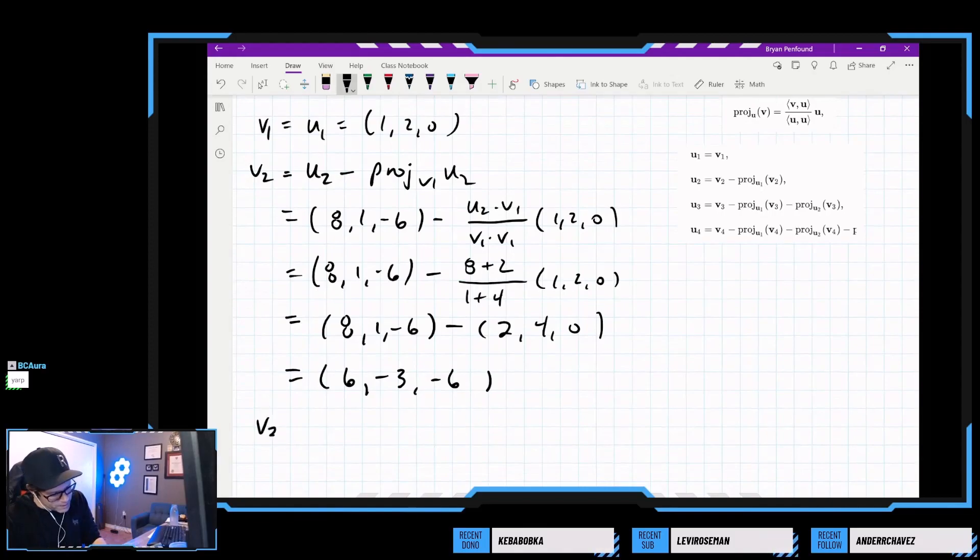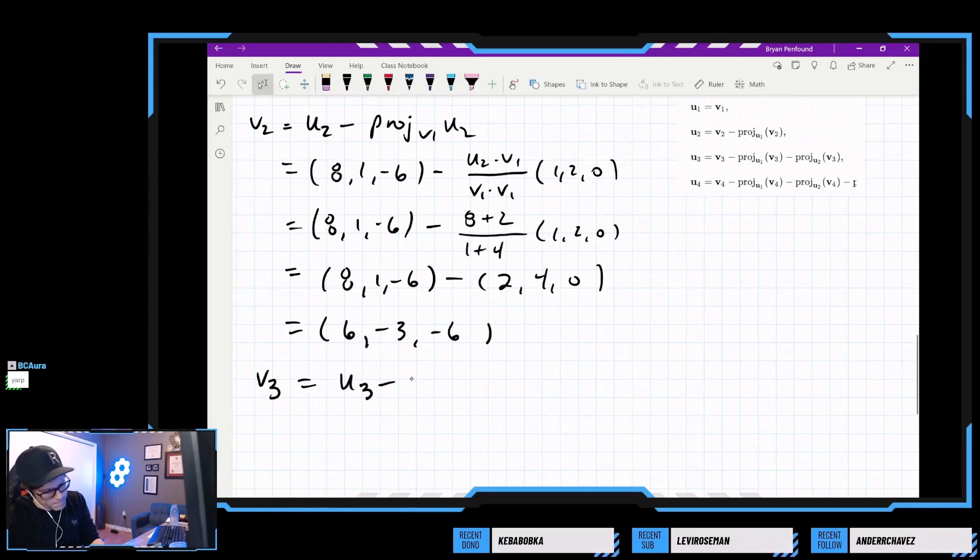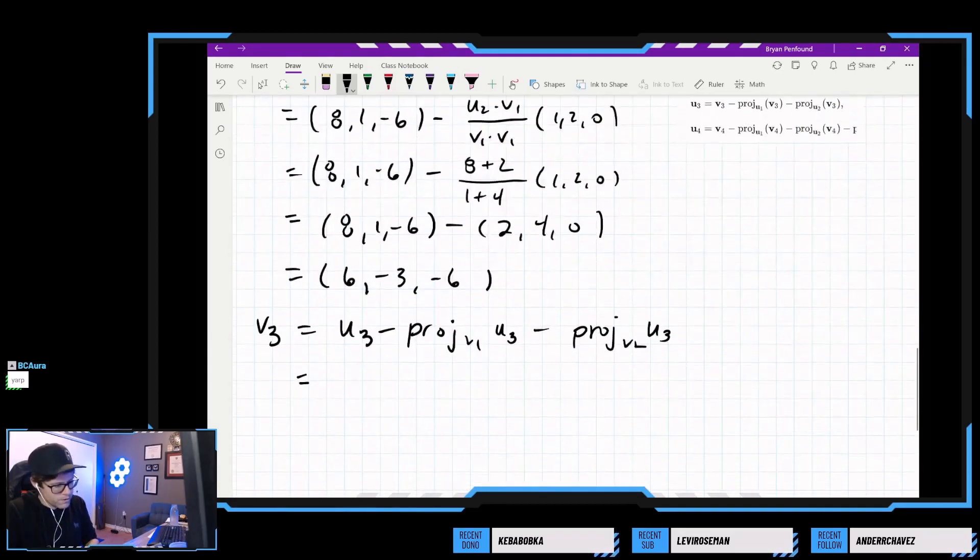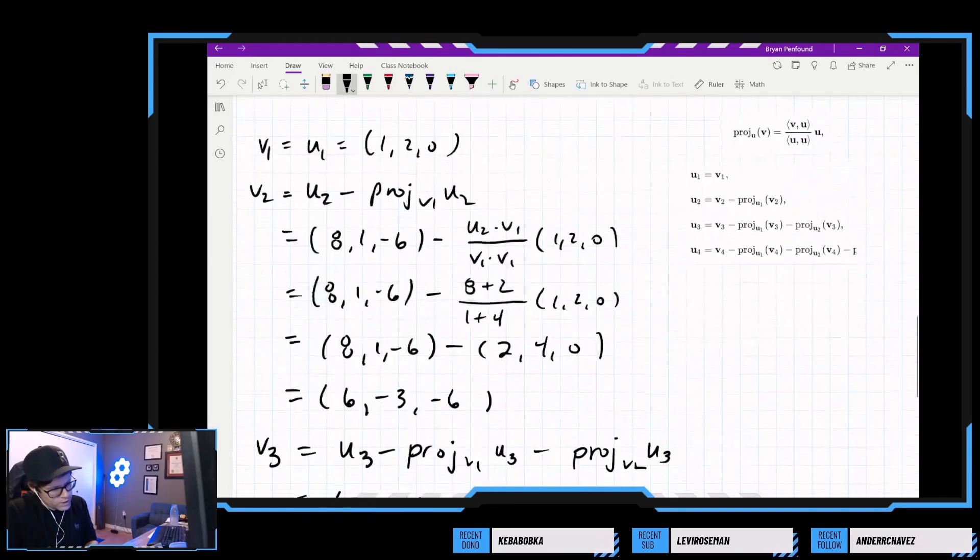So I'm happy with that. So that means our third vector should be defined to be u3 minus the projection of u3 onto v1 minus the projection of u3 onto v2. This projection is u3 dot v1, v1 dot v1, and v1 is 1, 2, 0.